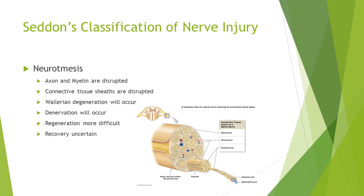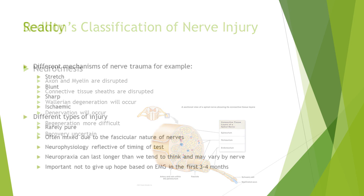In neurotmesis, the axon and myelin are disrupted, but also the connective tissue sheaths as well. So Wallerian degeneration will occur, denervation will be picked up on EMG. Regeneration is now more difficult because those structures which help guide the nerve fibers back down again are impaired and disrupted, and therefore it's very uncertain to what degree recovery might occur.